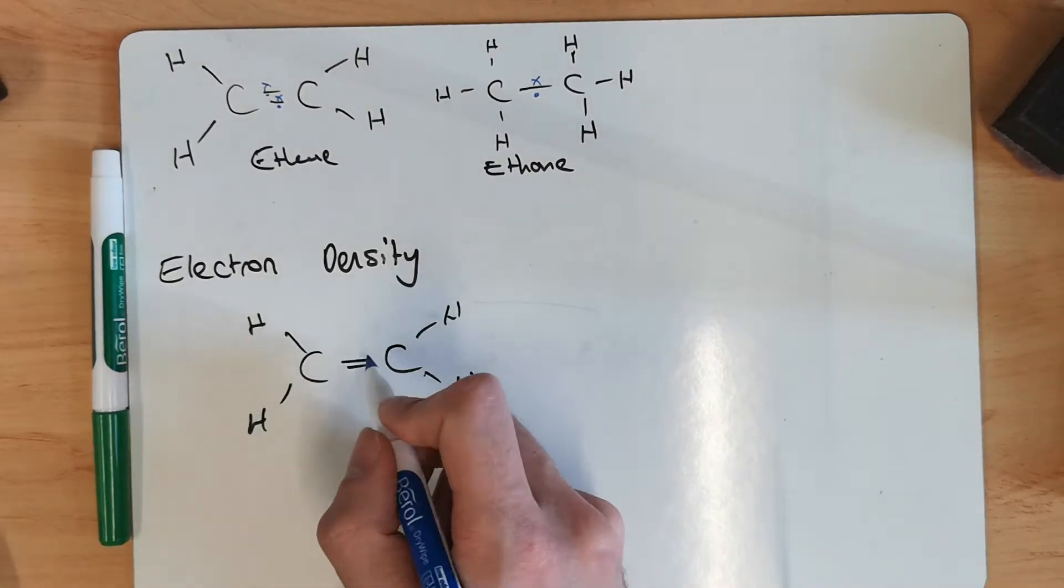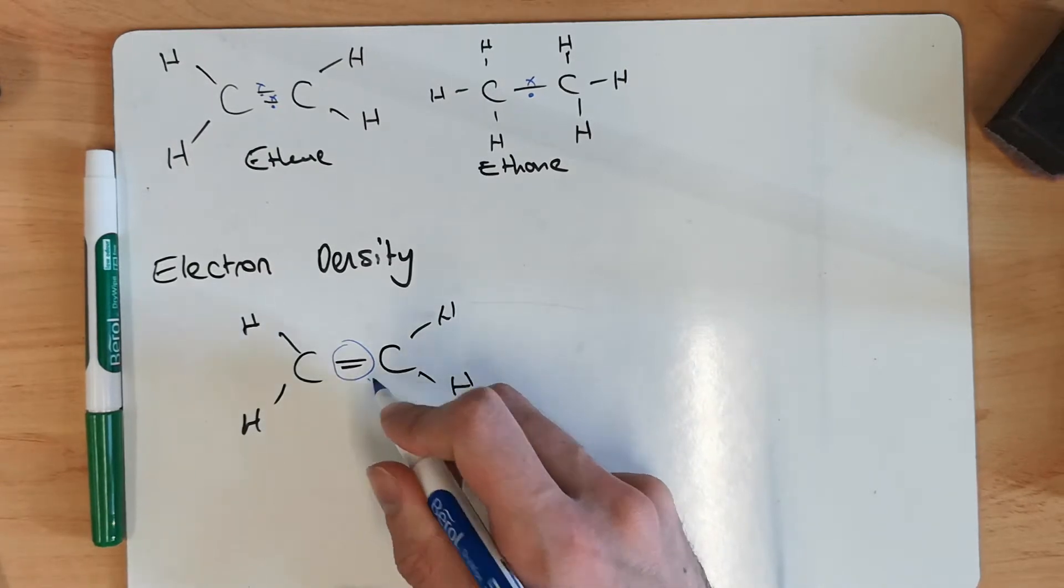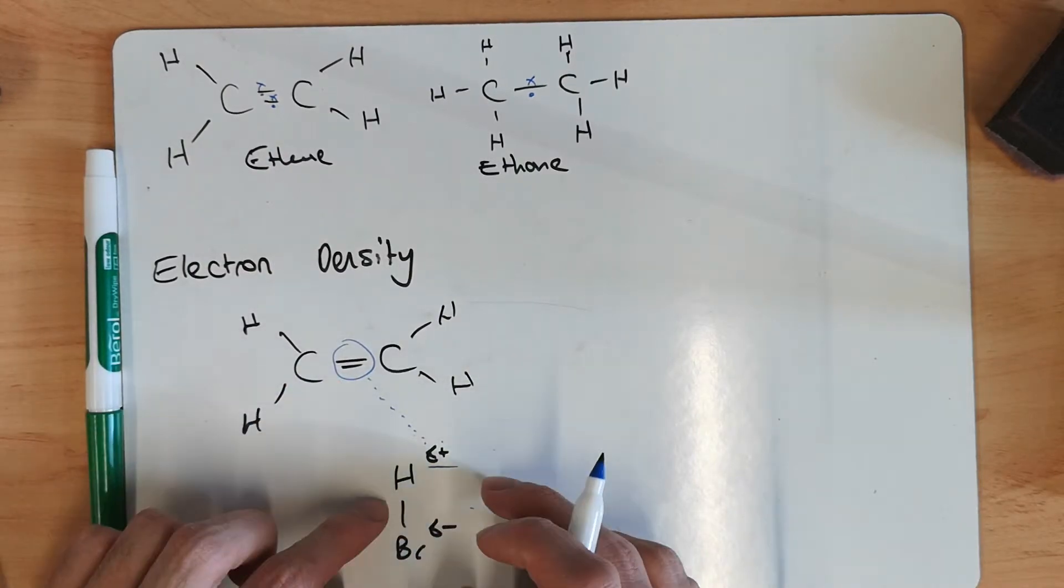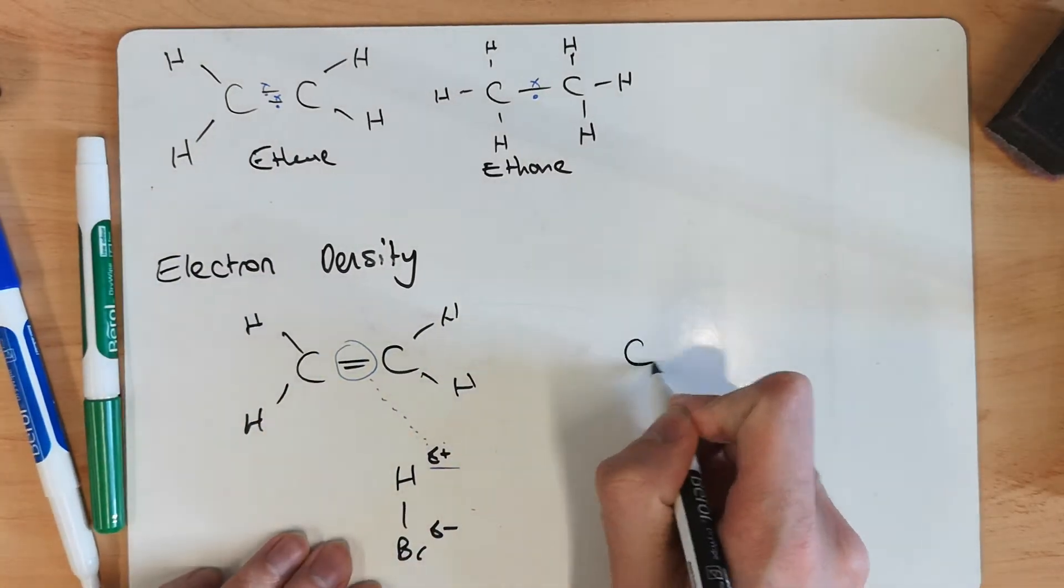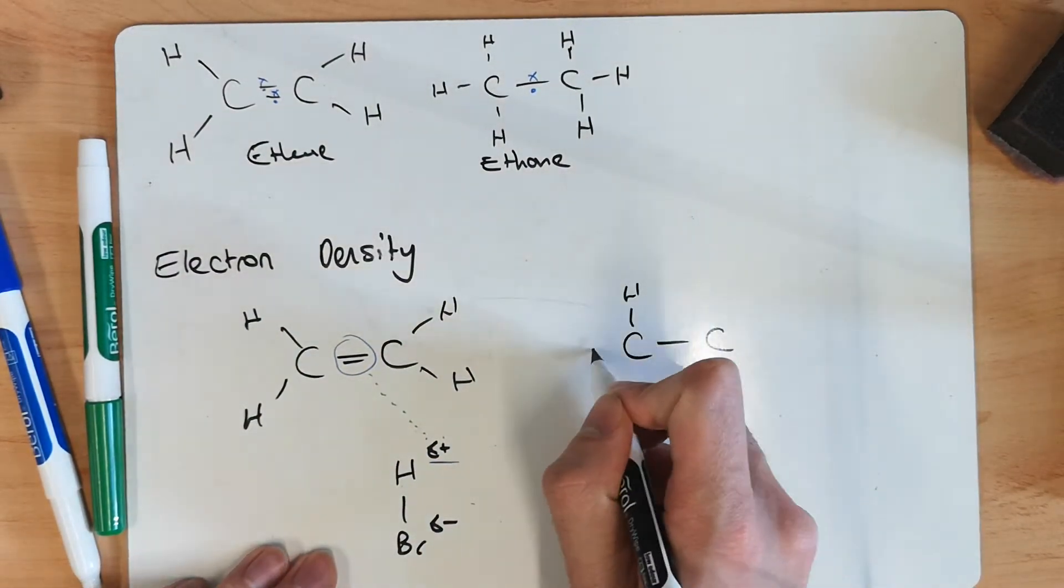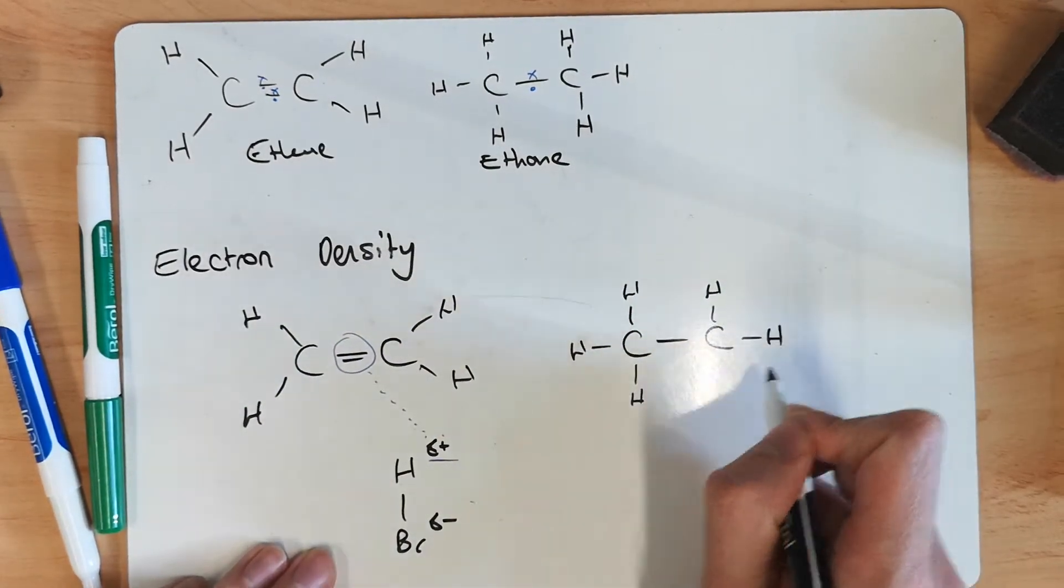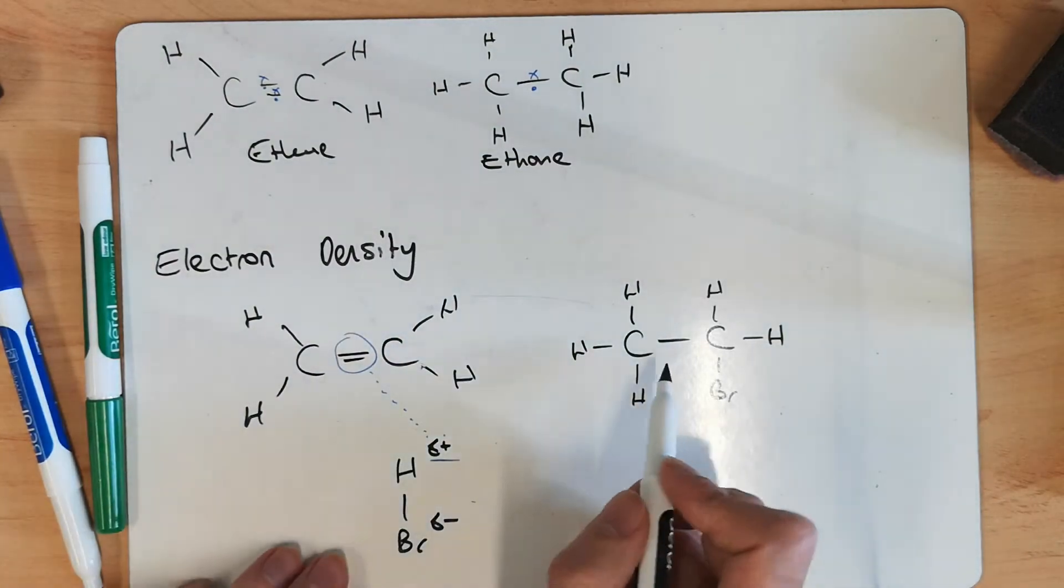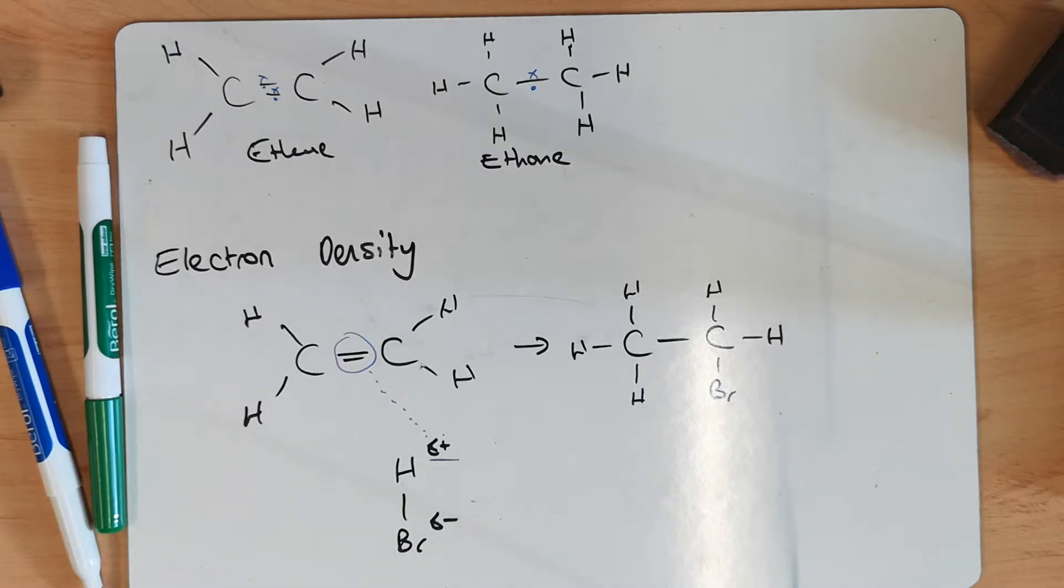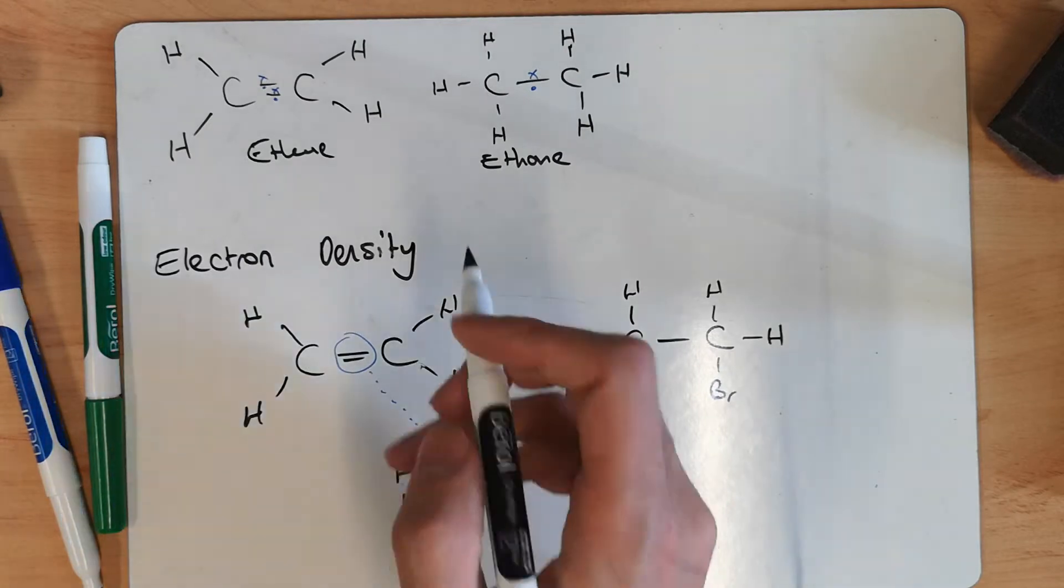...this becomes attracted to that and moves closer. So this moves closer, and then they react. And what you end up with is that weak pi bond breaking, hydrogen going to one carbon, and then the bromine attracting to the other. So we see that weak pi bond is broken, and we get hydrogen on one side, bromine on the other. This breaking down, and each going to separate carbons.